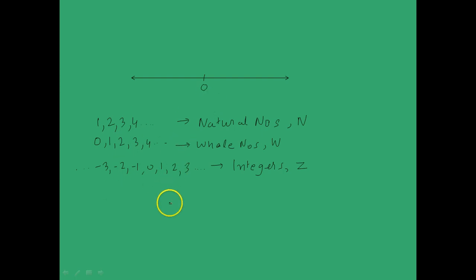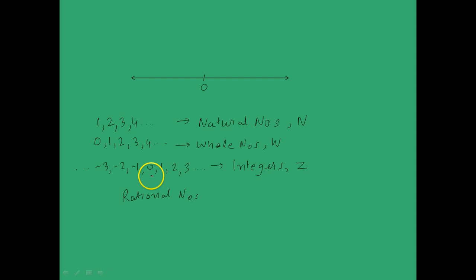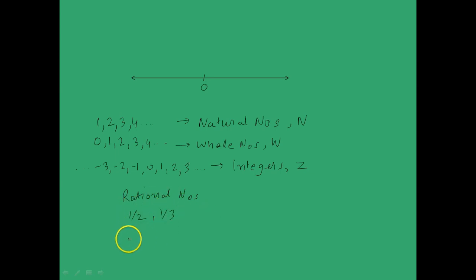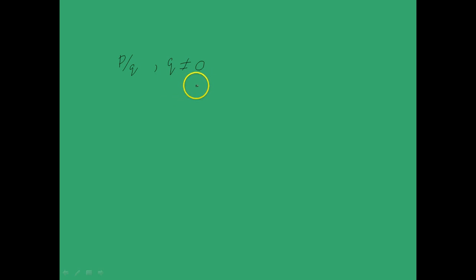Now if you take out all of these numbers from the number line, the question is are there any numbers that still remain? The answer is yes. One set of those numbers is called rational numbers. As you might have guessed, numbers like one-half or one-third are not in any of these sets, so obviously there must be some numbers left over on the number line. Half and one-third belong to a set called rational numbers, and the definition of rational numbers is a number which can be represented in the form P by Q, where Q is necessarily not equal to zero, because division by zero is not allowed in mathematics.